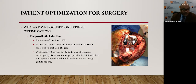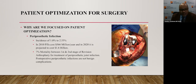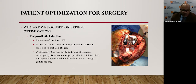We're also very interested in patient optimization due to periprosthetic infections, with an incidence of 1% to 2.55%. In 2010, periprosthetic joint infections cost $566 million for the year, and in 2020 it's projected to cost $1.6 billion. There is a 7% mortality between the first and second stage of revision arthroplasty for treatment of periprosthetic joint infections — so postoperative periprosthetic joint infections are not benign complications. That mortality rate is higher than some cancers.